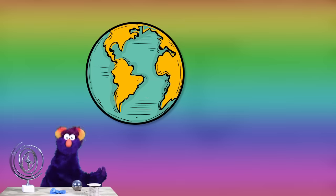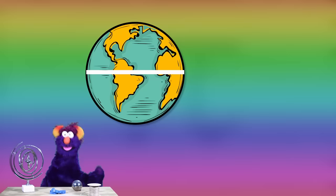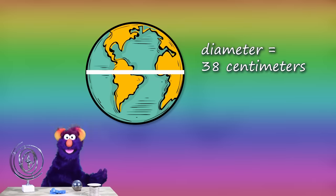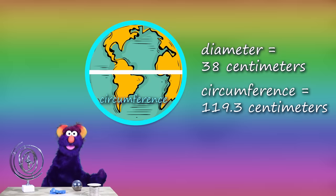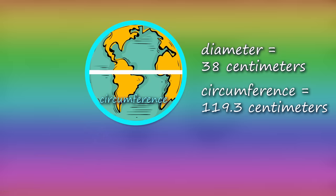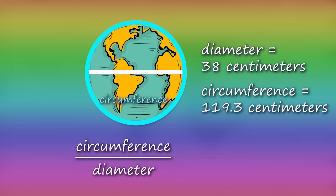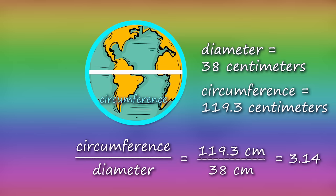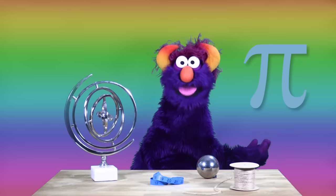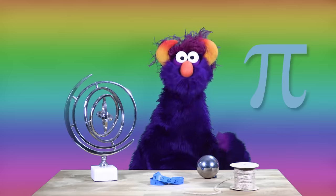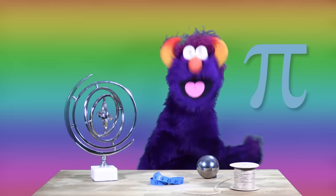Let's look around and find more circles to test. How about this picture of the Earth? The diameter is 38 centimeters. The circumference is 119.3 centimeters. Let's divide the circumference by the diameter. We get pi again — planet Earth pie. Tastes like dirt. Yuck.